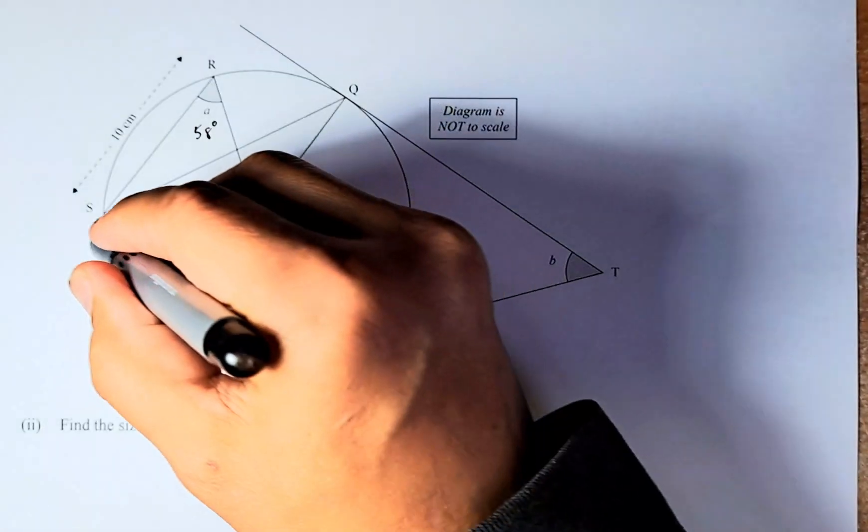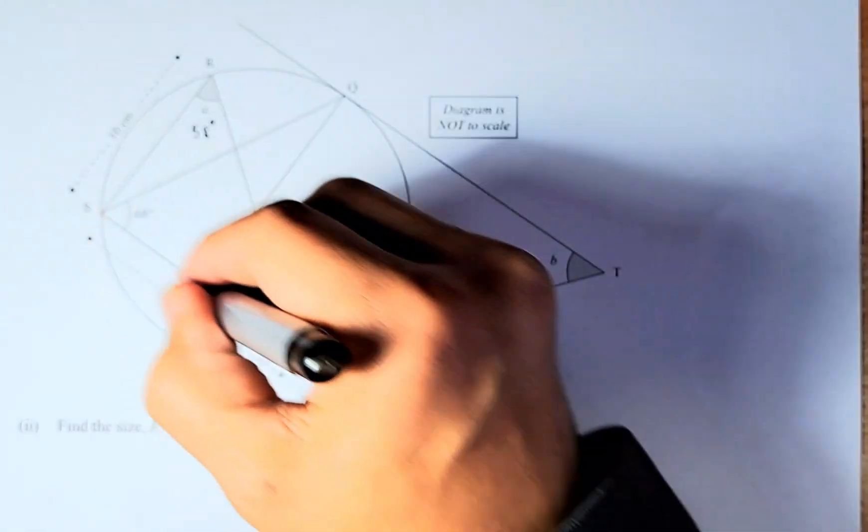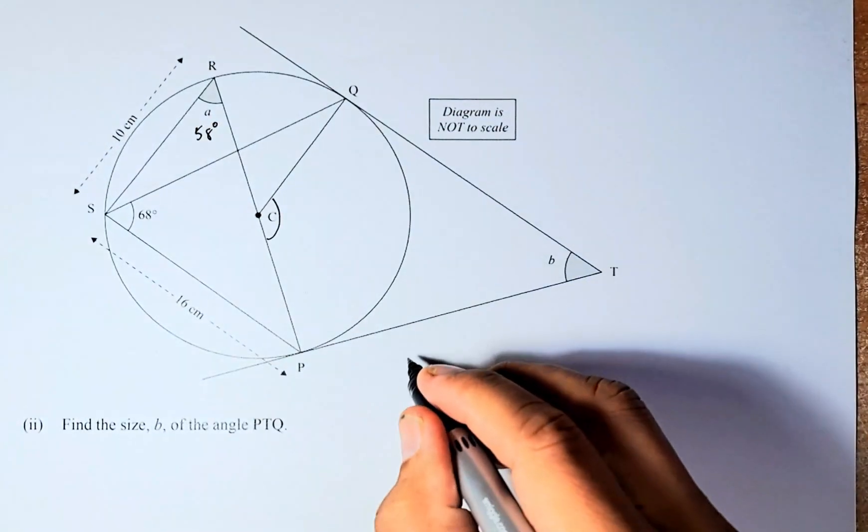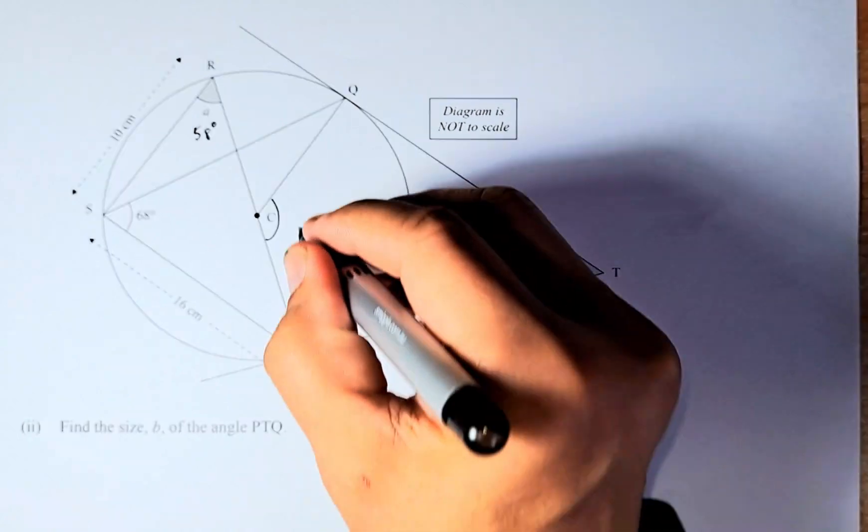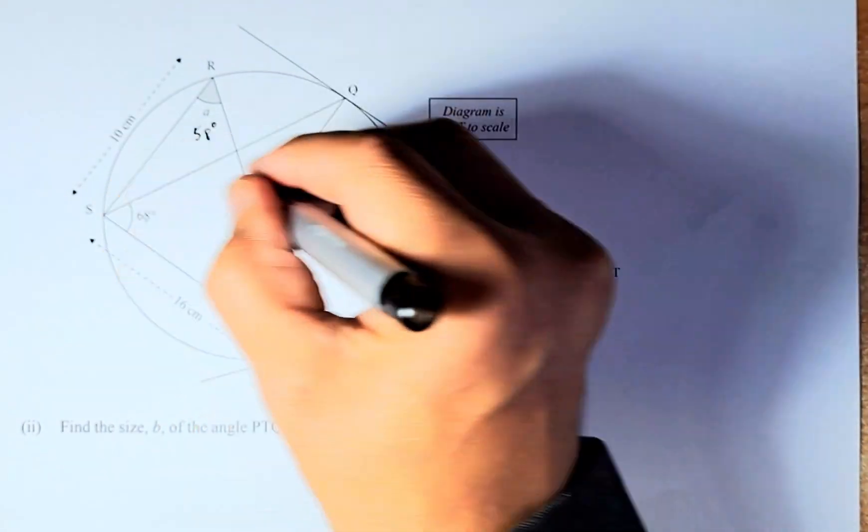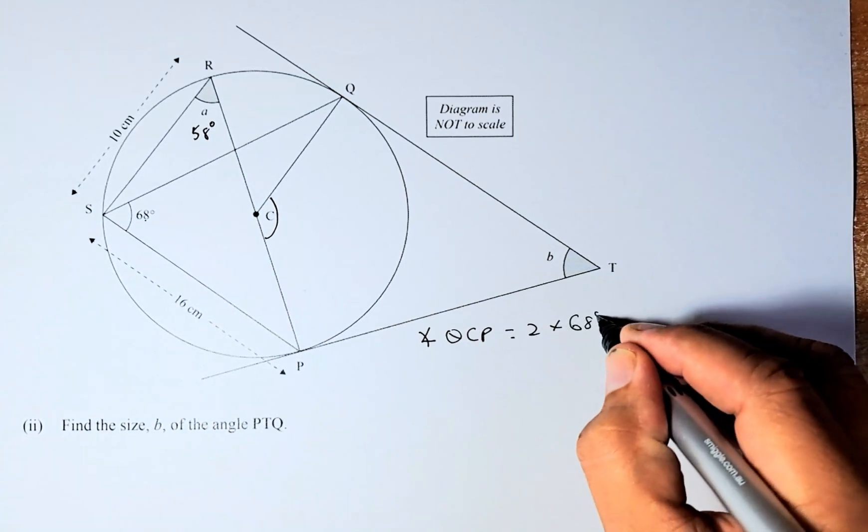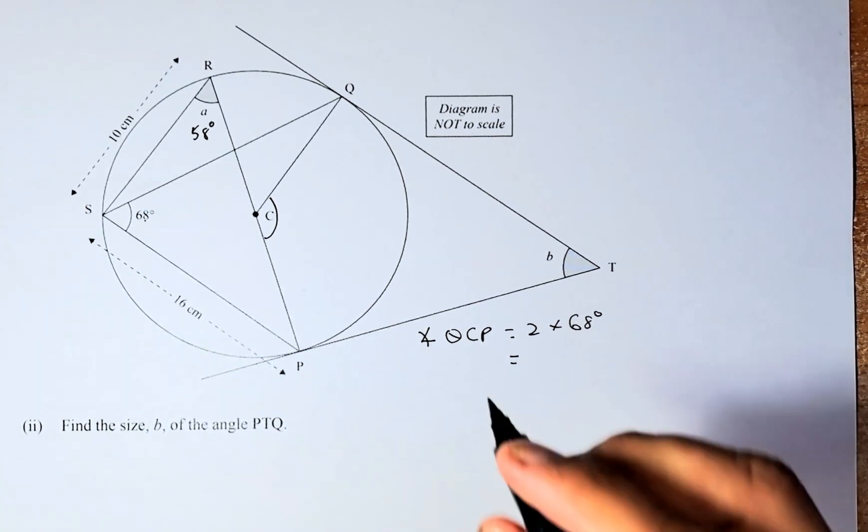So in angle B, if we look at this quadrilateral SPCQ, that quadrilateral, that angle C or angle Q, we are going to write here: angle QCP is going to be double that of 68, because that is the angle at center. So that is going to be 2 times 68 degrees, which gives us a total of 136 degrees.